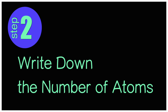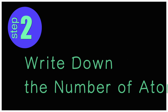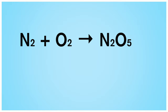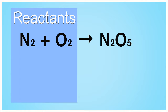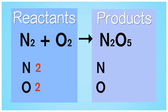Step 2: Let's write down the number of atoms. On the reactant side, there are 2 nitrogen atoms and 2 oxygen atoms. On the product side, there are 2 nitrogen atoms and 5 oxygen atoms.